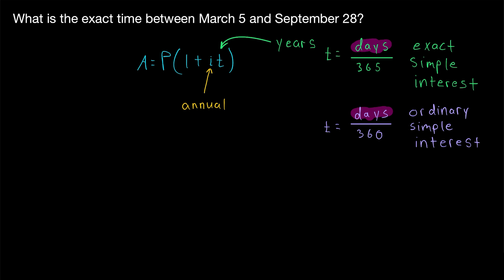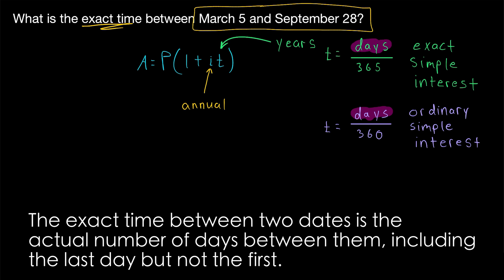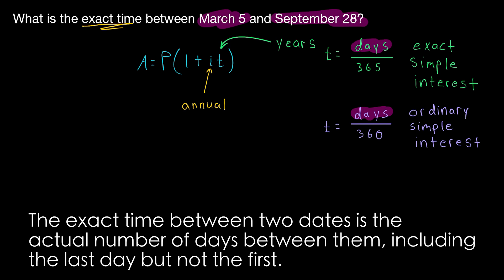The two common ways to count days are called exact time and approximate time. Exact time is the exact or true number of days between two dates. For example, the exact time between March 5th and September 28th, assuming the same year, is the total number of days between those dates. We count September 28th, but we don't count March 5th — we include the last day in the period, but not the first.